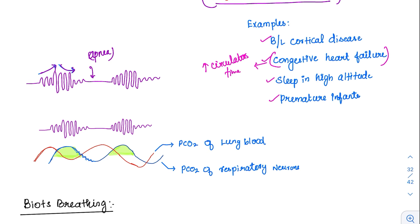Here we have represented with two diagrams: the PCO2 of lung and PCO2 of the respiratory neurons. There is a lag between the lung blood and the blood arriving at the respiratory center. So what is happening here? Let's try to understand.